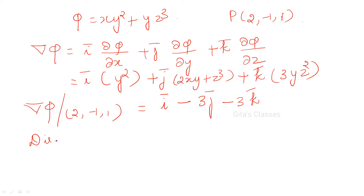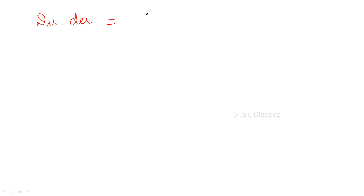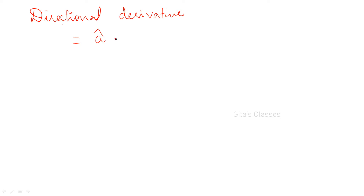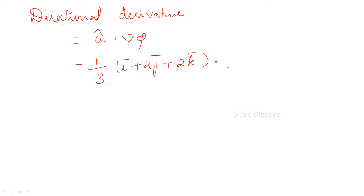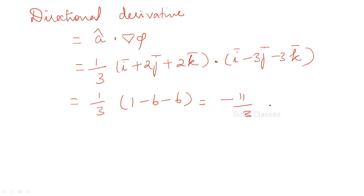Now the directional derivative is a_cap dot del phi. That is 1/3 times (i plus 2j plus 2k) dot (i minus 3j minus 3k). This equals 1/3 times (1 minus 6 minus 6), which is minus 11/3. This is the answer for the directional derivative.